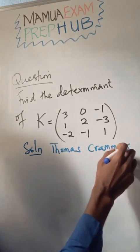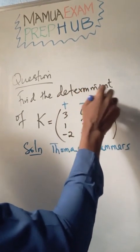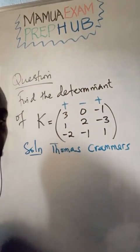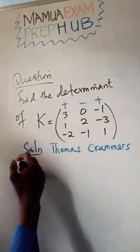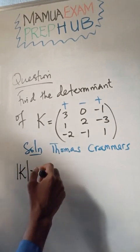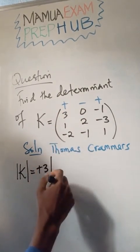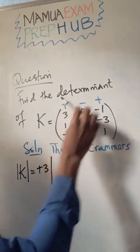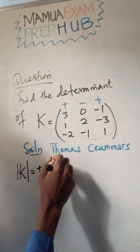First we want to establish our sign pattern: plus, minus, plus. So after doing that, the next thing is the determinant of K equals plus 3 into, if I cover this and this, I'm going to use this part. I'm going to put that.